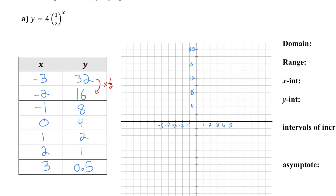The point negative three, 32 doesn't fit on my graph based on the scale I chose, but I can plot the rest of the points. And you can imagine if I continued my table of values — when x was four it'll be half of 0.5 which is 0.25, and when x is five it'll be half of 0.25 which is 0.125. I'll keep cutting those y values in half, and they're never going to get to zero. There will always be something left, which is why this function has a horizontal asymptote at y equals zero.